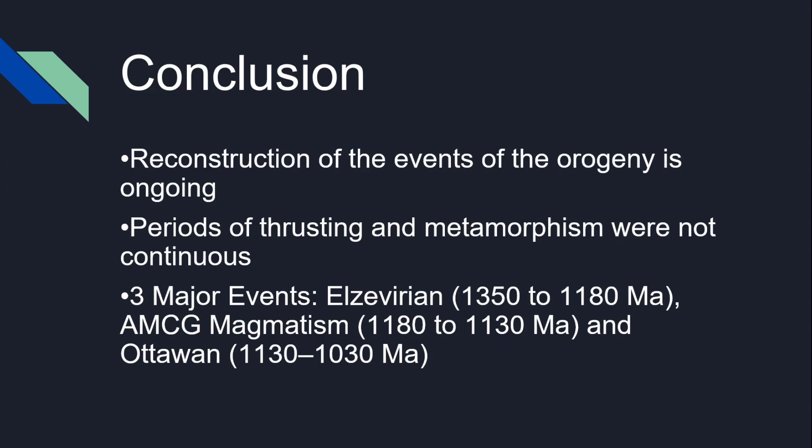In conclusion, there were multiple different events in the Grenville Orogeny cycle. Periods of thrusting, faulting, and metamorphism were not continuous — there were times of convergence, then quiescence, and a second period of convergence. The three major events are: the Elzevirian from approximately 1,350 to 1,100 million years ago; AMCG magmatism from 1,180 to 1,130 million years ago; and finally the Ottawaian from 1,130 to 1,030 million years ago. Thank you.